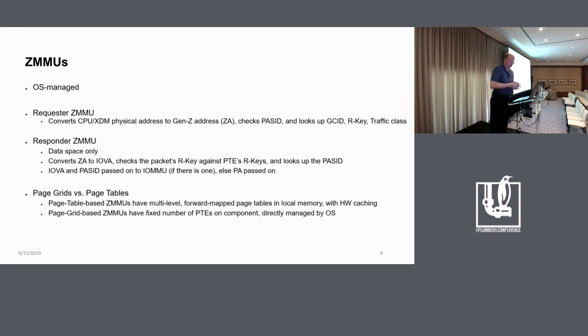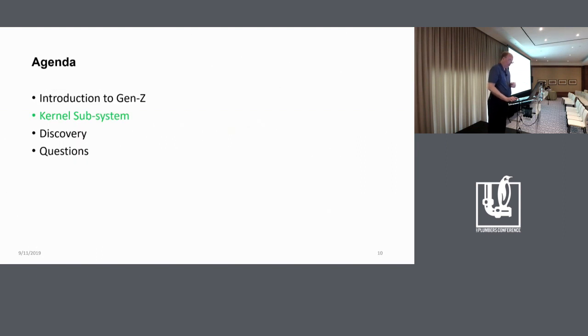And the Gen Z spec defines two different kinds of ZMMU structures. The first is called a page table-based one, which is structured much like a CPU's MMU with multiple levels of in-memory page tables and caching of those elements into the... into a TLB in the IOM, or into the ZMMU, sorry. Very much like a CPU or IOMU structure. But there's also another kind, which is called the page grid, which is an on-chip only, no tables in-memory. And it has a fixed number of PTEs and therefore, it's a very limited resource. And so, we need to have code in the subsystem that handle both of those kinds of ZMMUs.